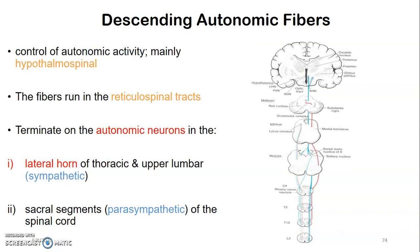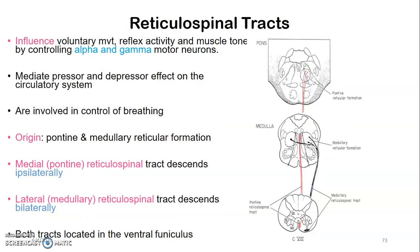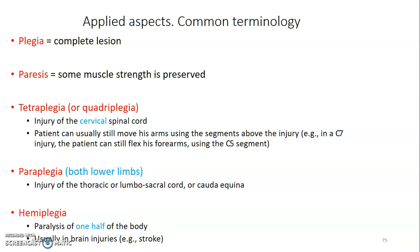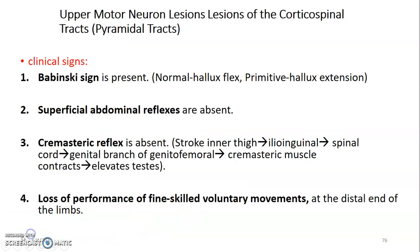Descending autonomic fibers control autonomic activity mainly via the hypothalamospinal tract. These fibers run in the reticulospinal tracts and terminate in the autonomic neurons. The lateral horn at T1–T12 and L1–L2 contains sympathetic neurons, and the sacral portions of the spinal cord contain the origin of parasympathetic nerves. Fibers from the hypothalamus to these regions are called hypothalamospinal tracts and control autonomic activity. Next, the applied aspects of the spinal cord will be discussed in the next lecture. Thank you very much.